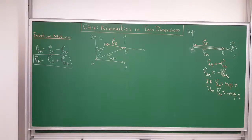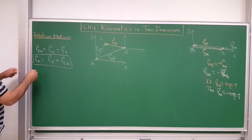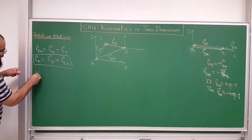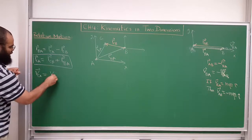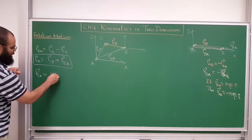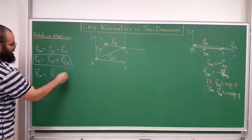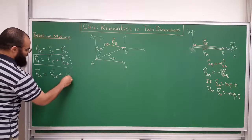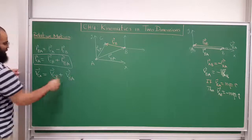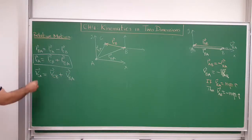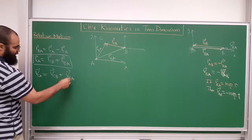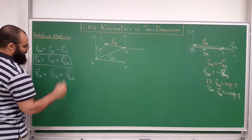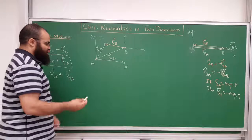And if I take the derivative of this formula with respect to time, I will get the velocity of object C with respect to object A, relative to object A, is equal to the velocity of object C relative to object B, plus the derivative of this will give me the velocity of object B relative to object A. So they just add up. So the velocity of C relative to object A is equal to the velocity of object C relative to object B, plus the velocity of object B relative to object A.